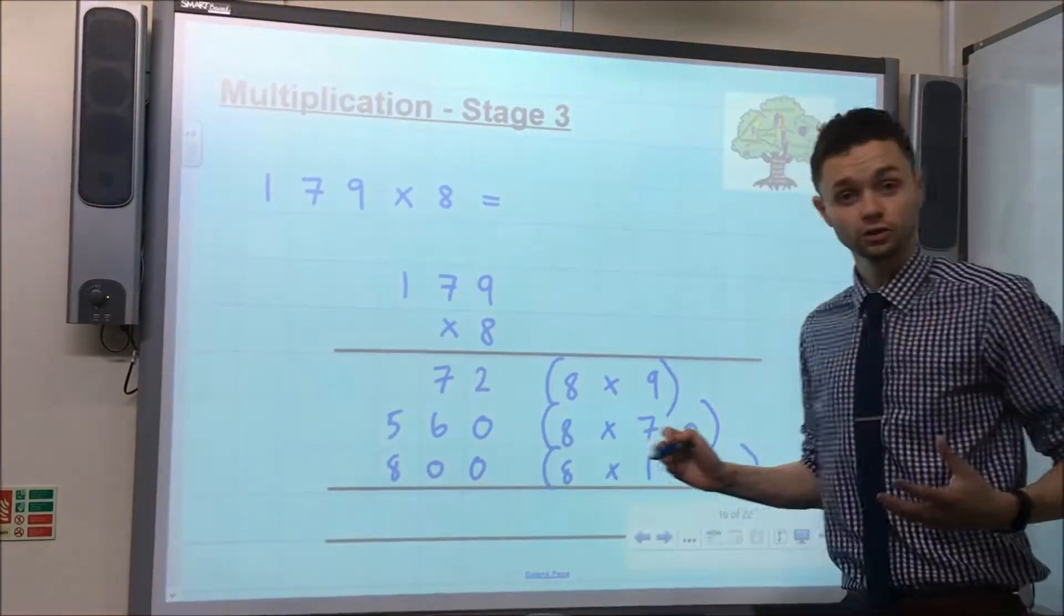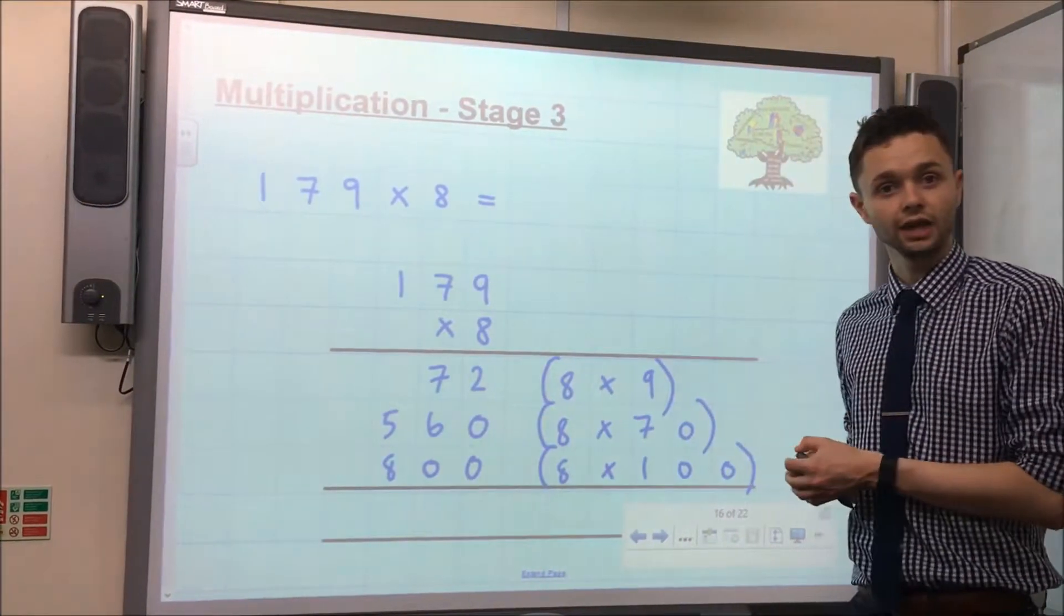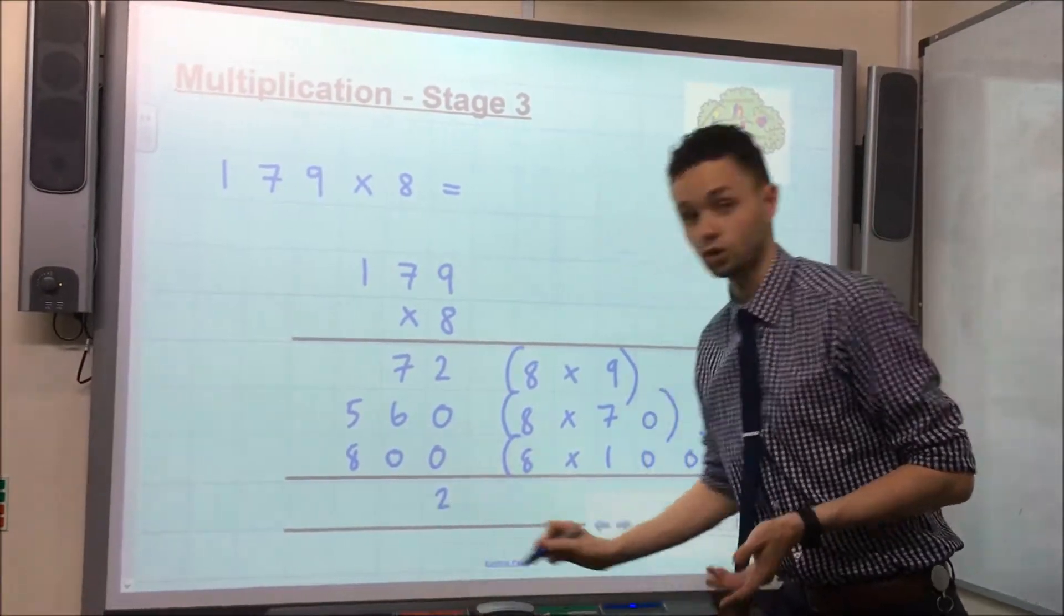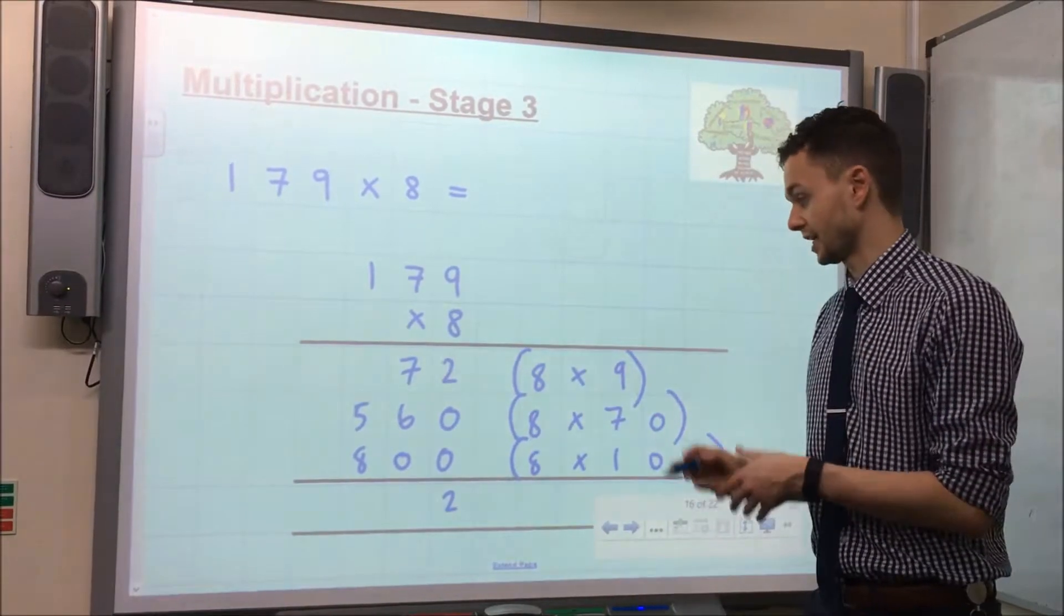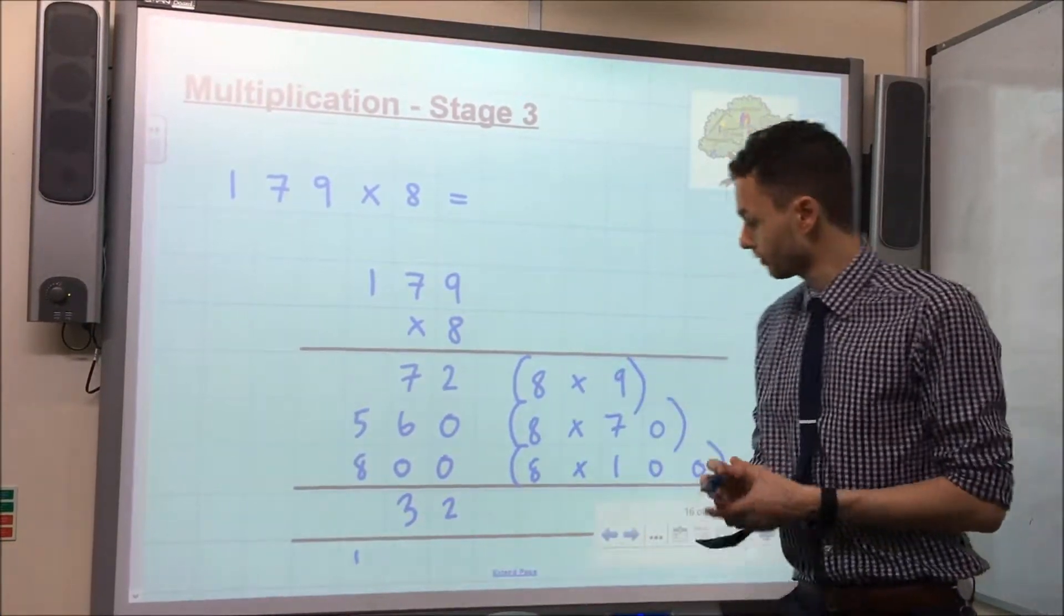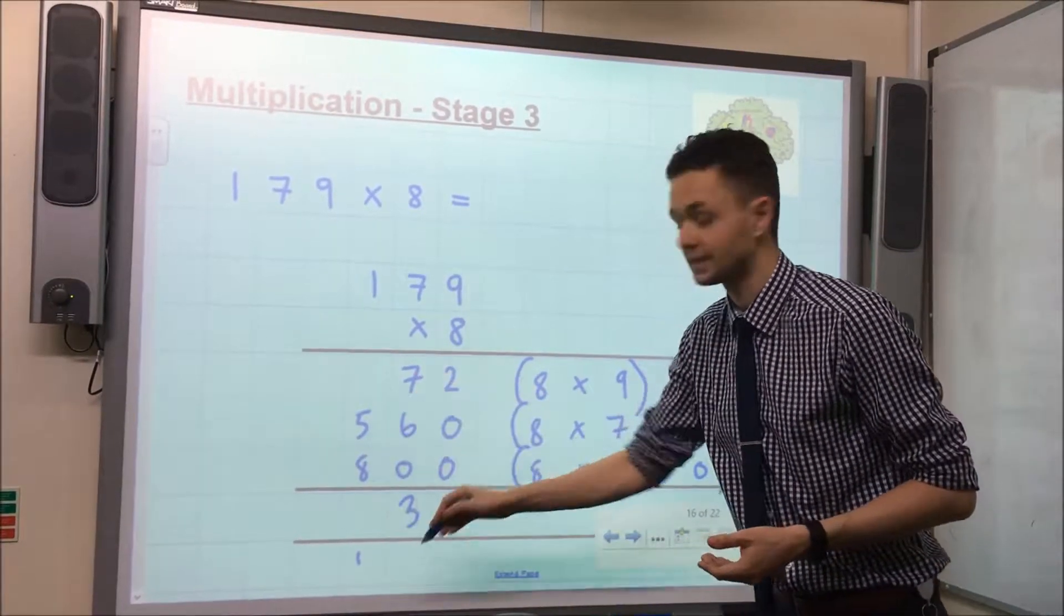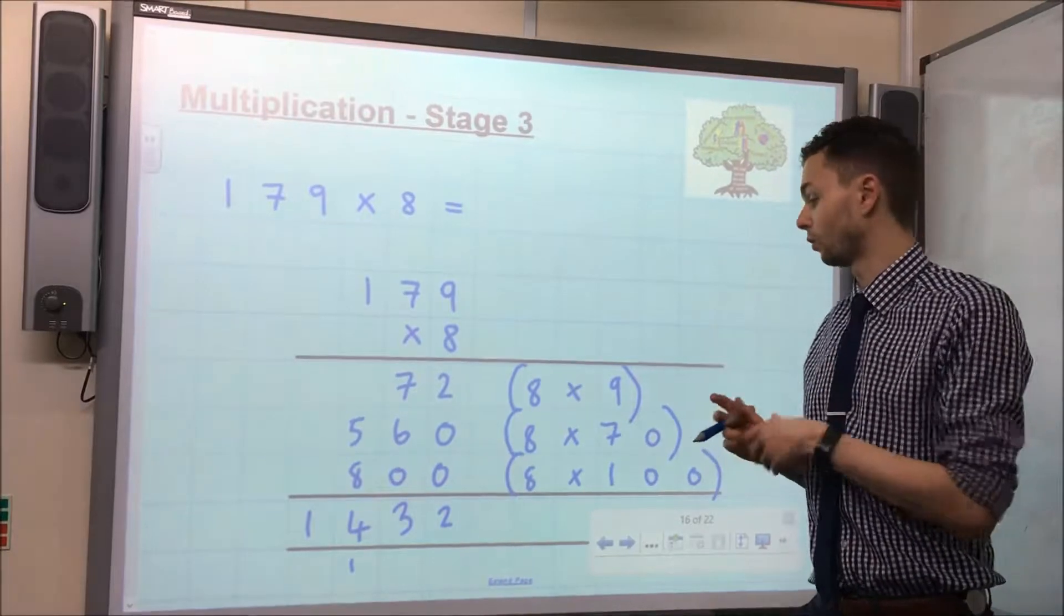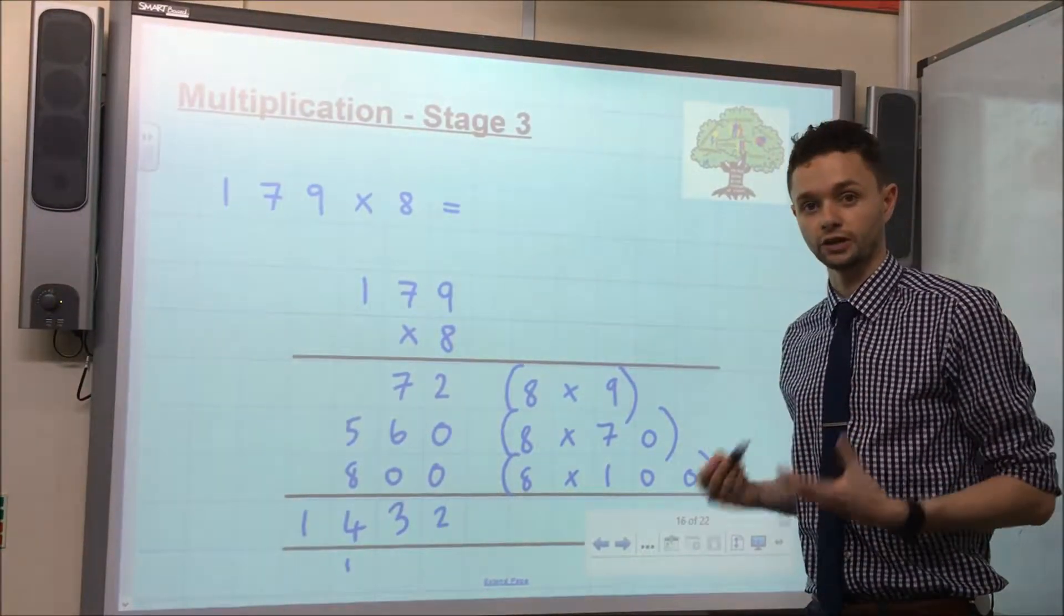And then the final stage is to add all of these calculations together to give us our final answer. So 2 add 0 and 0 is 2. 7 add 6 is 13 or 13 tens. We carry the 1 over and then we've got 5, add 8, add 1, gives us 14, meaning that the answer is 1432.